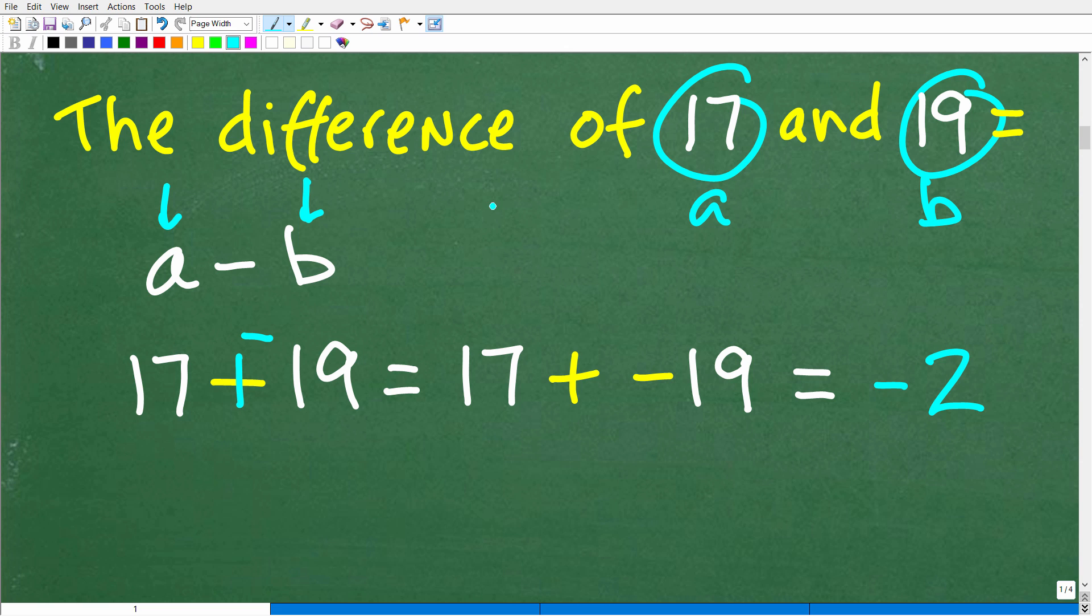Alright, now let's go ahead and use this concept of money to explain why the answer here is negative 2. So 17 is like you having $17. This is a positive number. Okay, so let's suppose you have $17. Of course, that's great.